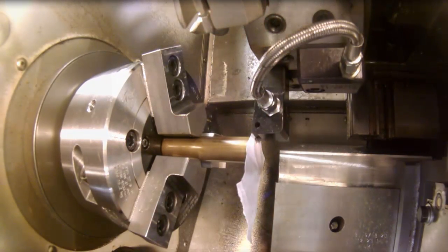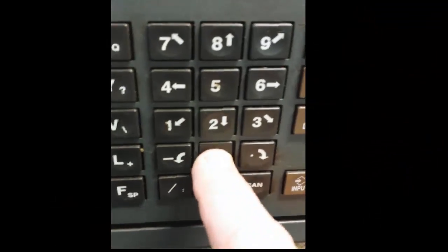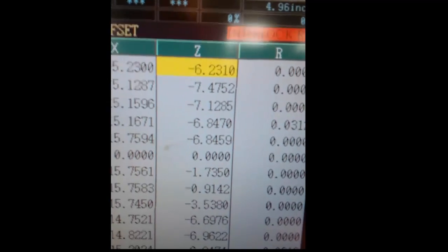And at that point, you again do Z, zero, measure, and it will update the Z location of the tool.